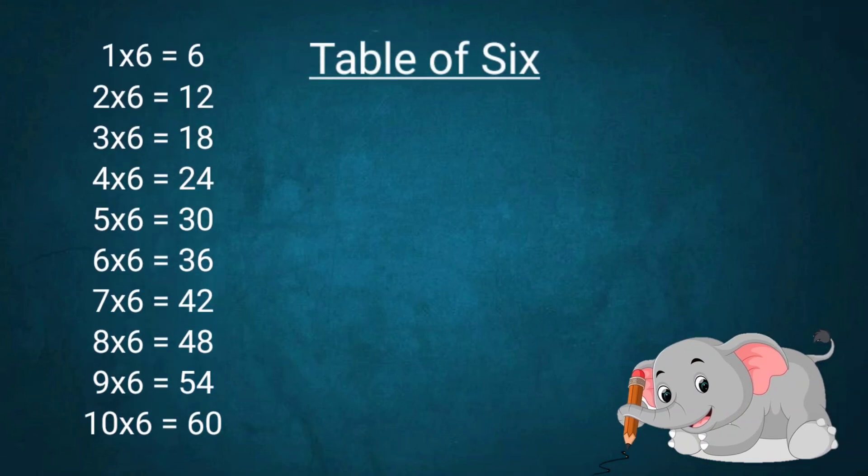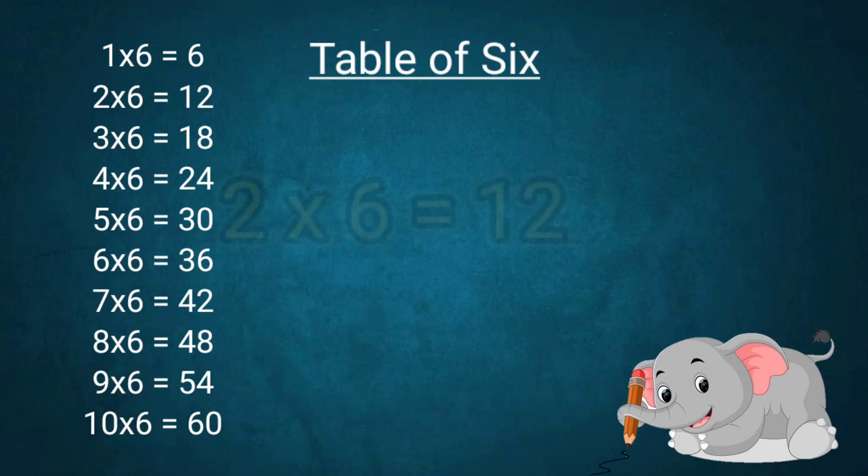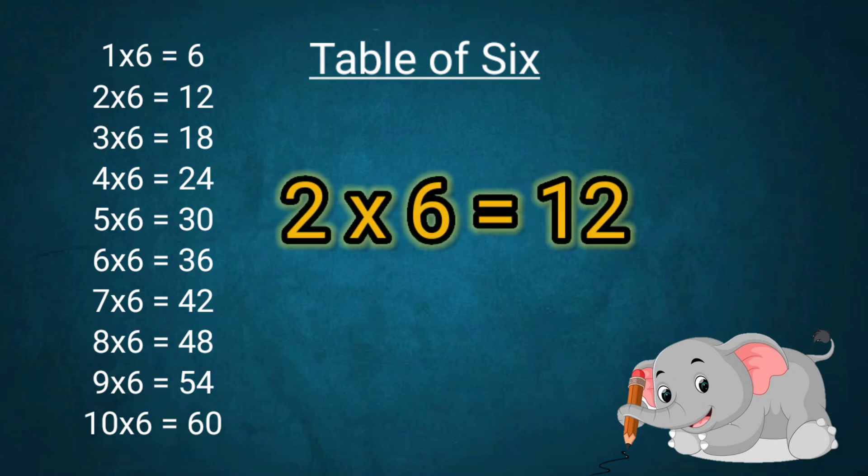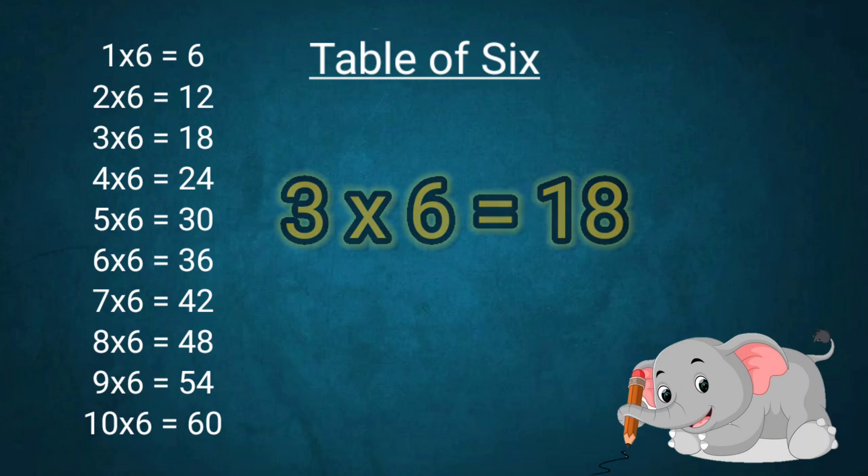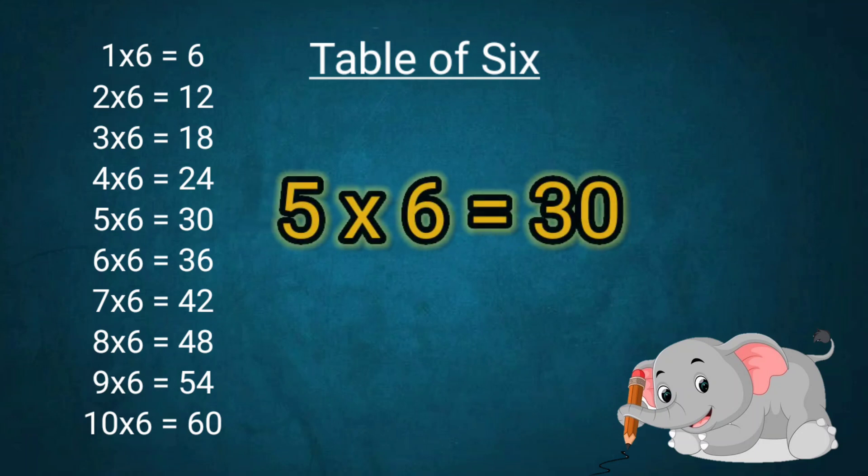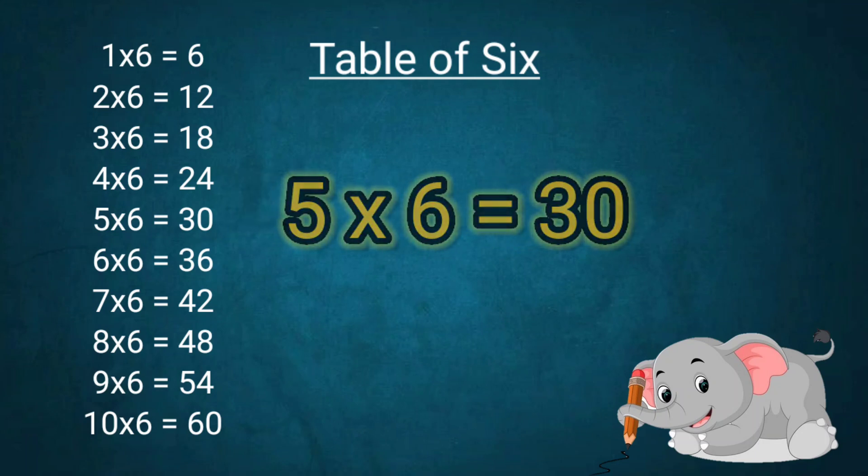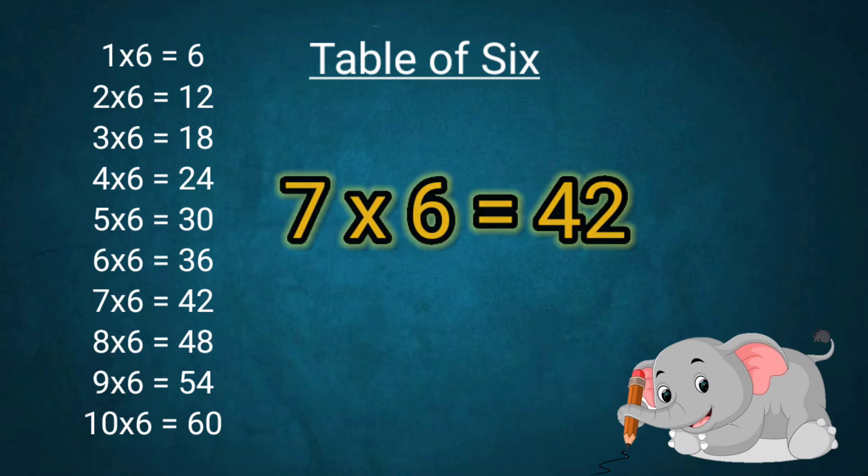Table of 6: 1x6=6, 2x6=12, 3x6=18, 4x6=24, 5x6=30, 6x6=36, 7x6=42, 8x6=48.